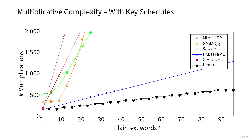NIST is considering starting a process to standardize threshold MPC-friendly crypto including symmetric encryption. Would you consider submitting Hydra there? In general, if there's a call for encrypting large amounts of data in MPC, it would make sense to submit. Potentially there are improvements — our main security analysis focus was on the heads of the Hydra, so one could potentially come up with more efficient constructions in the body, since we mainly relied on what was done in HADES-MIMSI. But if there's a call for encrypting large amounts of data, we can certainly consider that.